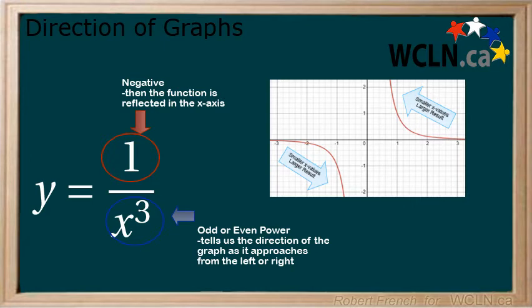Therefore, as we approach from the left and the right, we are dividing by smaller values of x and therefore returning larger values, creating either an upward or downward trend. Next, we will look at a specific case.